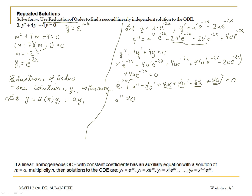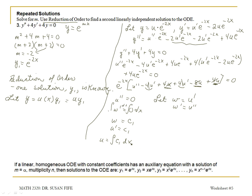In reduction of order, you make a substitution here. Let w equal u prime, so w prime equals u double prime. This is the actual reduction of order — changing this from a second order ODE to a first order ODE that you can solve by integrating both sides. Integrating w prime equals 0 gives w equals C1. Back-substituting, since w is u prime, we get u prime equals C1. Integrating C1 with respect to x gives u equals C1x plus C2.